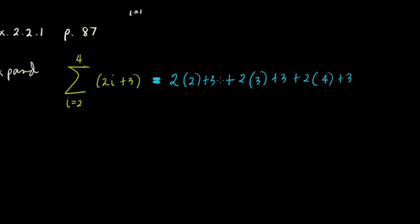So the summation, if it can be simplified, you simplify. So this is equivalent to 2 times 2, that's 4 plus 3, that's 7, plus this is 6 plus 3, that's 9, plus this is 8 plus 3, that's 11. So the summation is equivalent to 27.